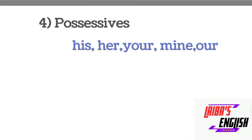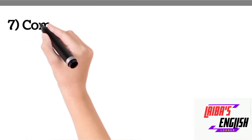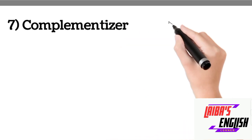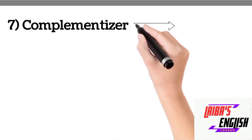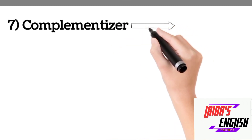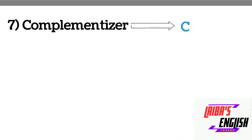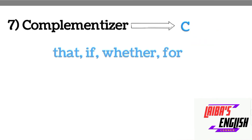Whenever you see a determiner, you have to check four things: demonstratives, articles, quantifiers, and possessives. Now the seventh lexical category is complementizers, which are denoted by C. Always remember that there are only four complementizers in English: that, if, whether, and for.